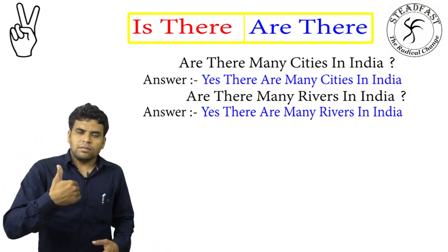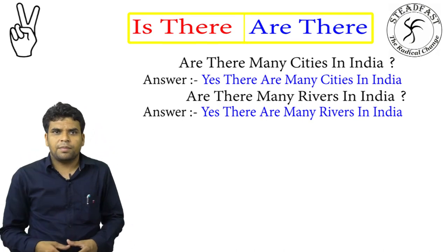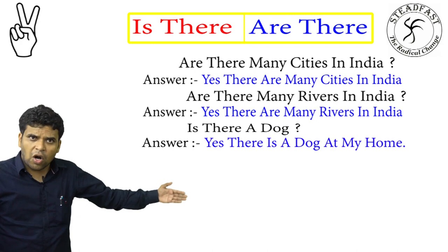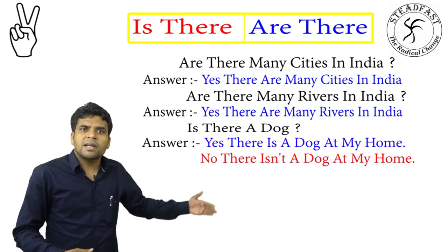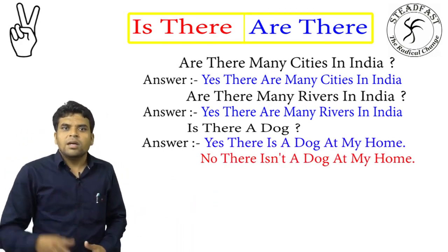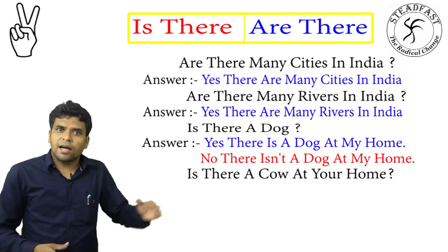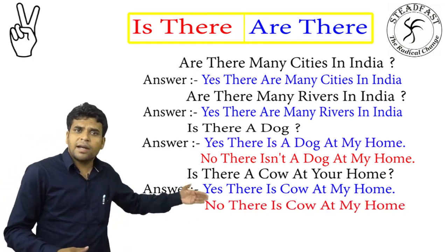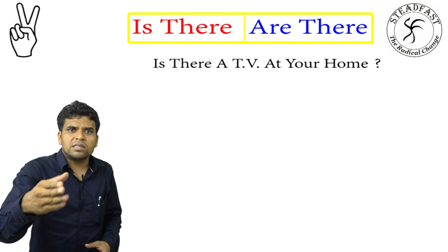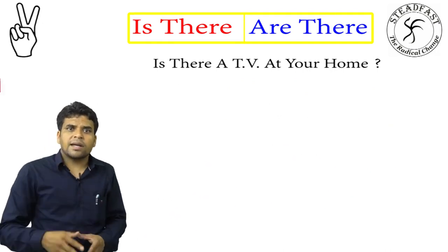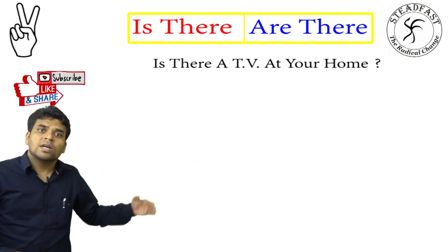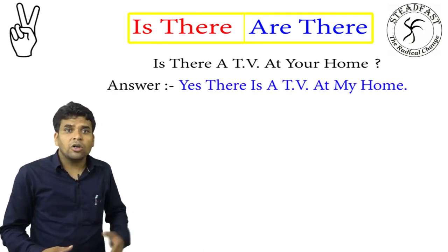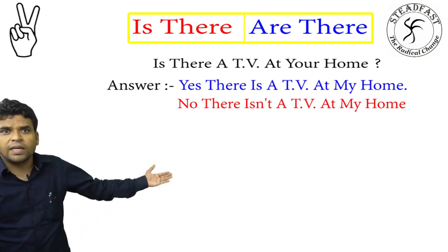Now I'm going to ask you a question about your home. Is there a dog? Yes, there is a dog at my home. No, there isn't a dog at my home. Is there a cow at your home? Yes, there is a cow at my home. No, there isn't a cow at my home. Is there a TV at your home? Yes, there is a TV at my home. No, there isn't a TV at my home.